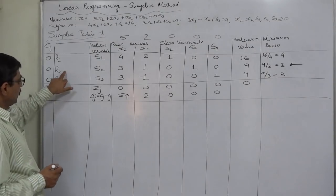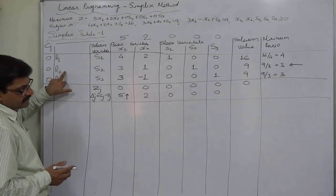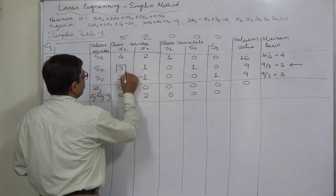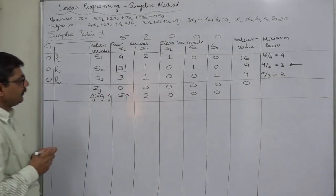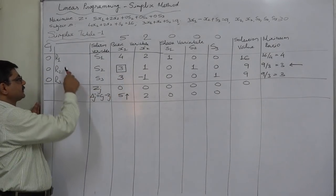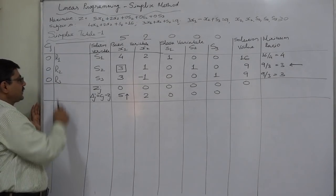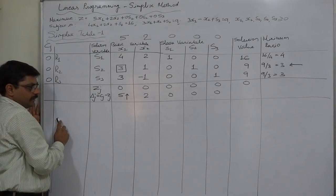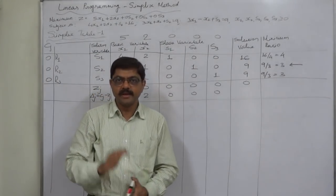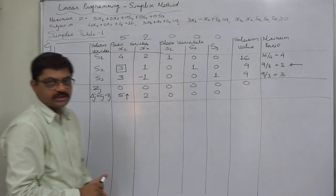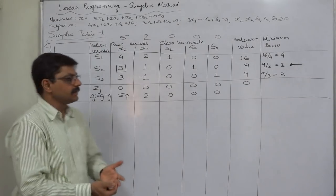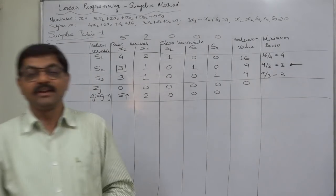Now for us R2 is replacement row or key row. The common element of key column and key row becomes the key element. We will divide R2 by 3. That process will give us 2nd row of the next table, that will be R5 when we prepare simplex table 2. That we are going to prepare in our next video lecture. So thank you for now. We are meeting in the next lecture to prepare simplex table 2. Thank you.